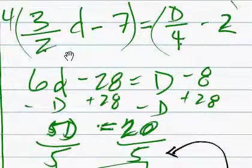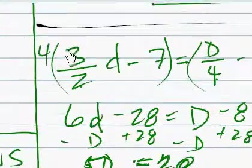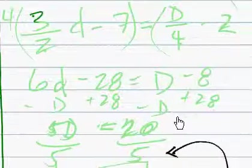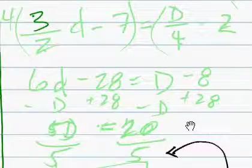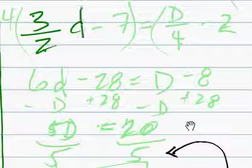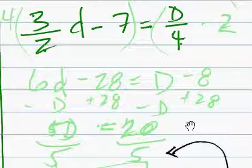Greetings, Dennis Daniels here. Let's solve this equation. This one is pretty straightforward. 3 half d minus 7 equals d over 4 minus 2.